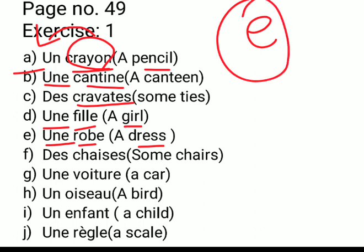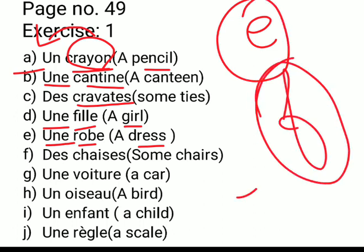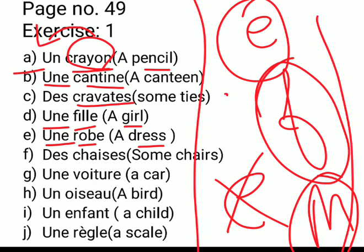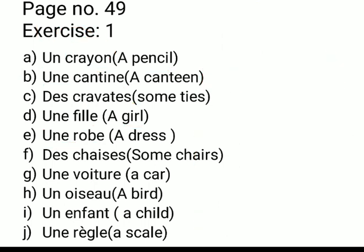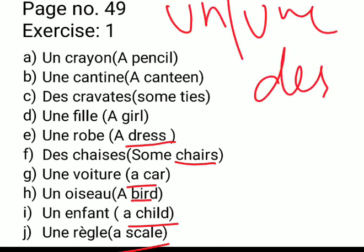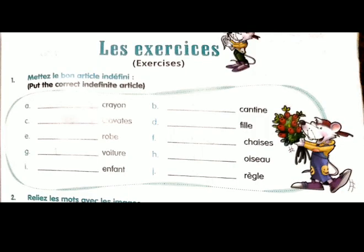Whenever a word is ending with E, it is feminine. Whenever the word is not ending with E, it is masculine. But this trick works only about ninety percent of the time, not one hundred percent. So according to the trick and the meaning of the words, you have to put UN, UNE, or DES. Now complete your exercise number one.